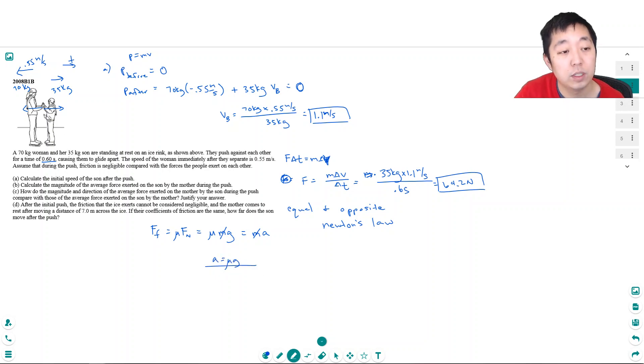So even though they're different masses, they have the same acceleration. That's a key point. The frictional force, while she might be heavier, her frictional force is twice as much. She's twice as massive, so the acceleration is the same as the son, just in the opposite direction. Same acceleration, but they have different velocities.